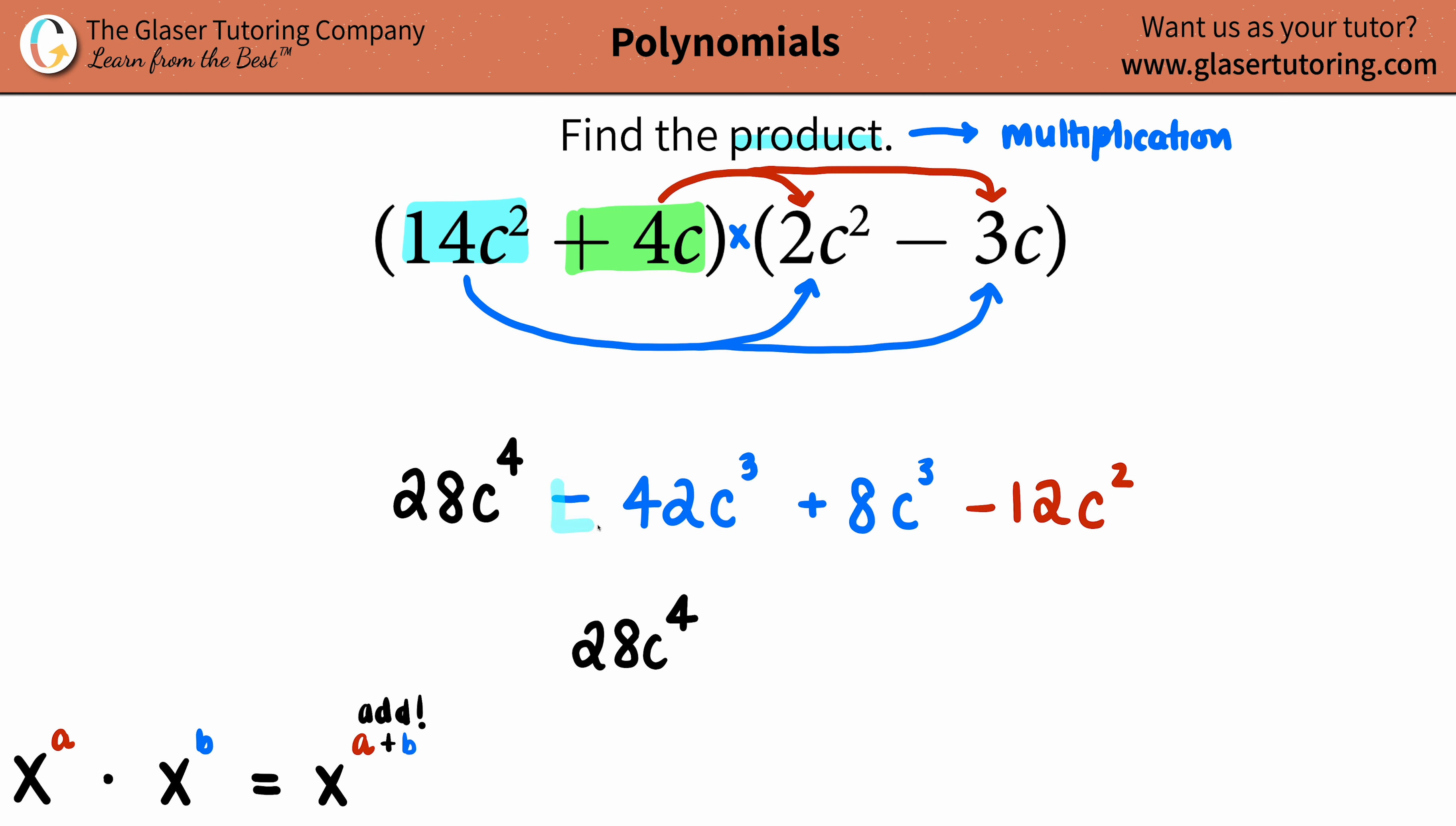So negative 42 plus 8, so definitely a negative. Let's see, 2, 4, what is that? 34. Negative 34. I'm just going to triple check on that. Yeah, that makes sense.